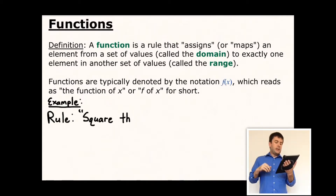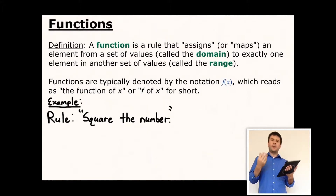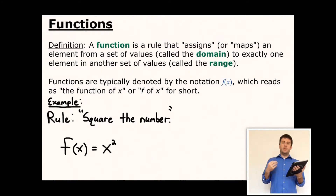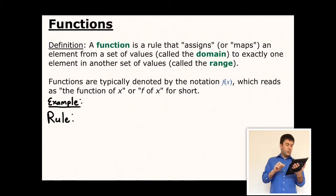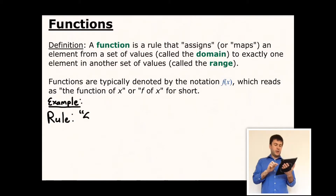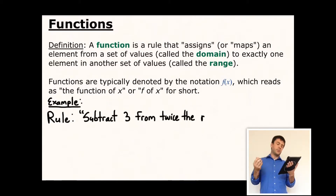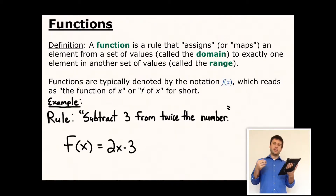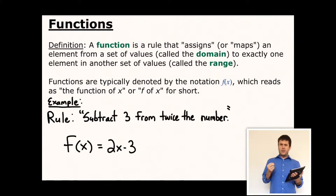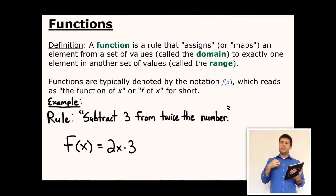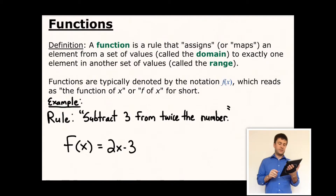For example, let's say you want to write function notation for a rule that says 'square the number.' In function notation, that would look like f(x) = x². And if you want to write a rule for 'subtract 3 from twice the number,' that would look like f(x) = 2x − 3. Writing a function rule from a description just involves knowledge of writing equations, function notation, and algebraic expressions.